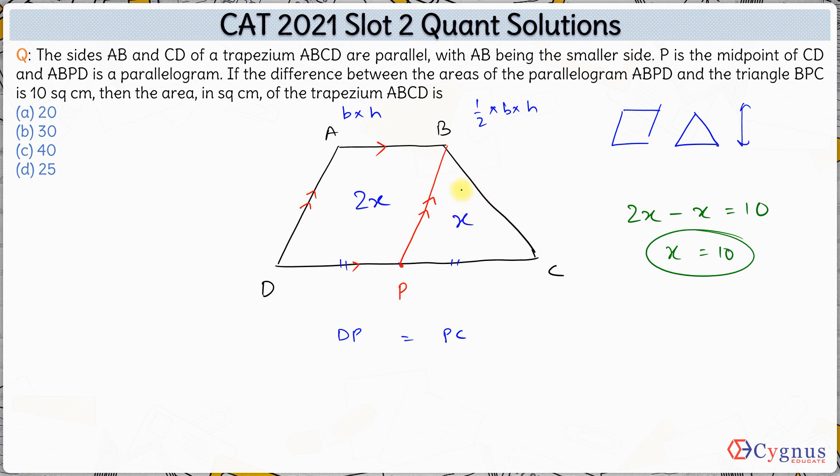So the area of this triangle is 10. Area of the parallelogram is 20. Hence, the total area of the trapezium is 20 plus 10, which comes out to be 30. Hence, the answer is option B. That's it for this question. Thank you.